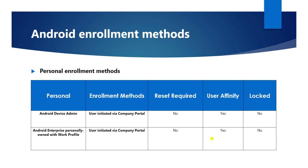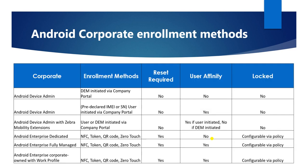For Android device management, there are two types of enrollment: personal and corporate. For a personal Android device using Device Admin, the method is user-initiated via the Company Portal. You install the Company Portal application from the Google Play Store on your Android device and configure from there. My coming videos will show you how to actually enroll a device.